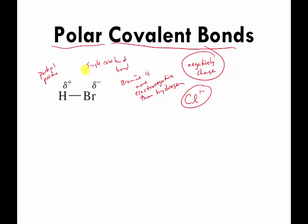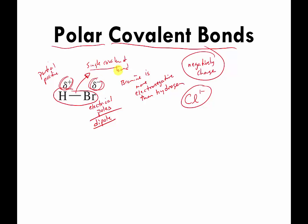Who cares? Fair enough — I'll show you an example where this is important in a few minutes. But I want to introduce a new term. This is a single covalent bond, but because there are these little electrical charges on either side of it, we say this molecule has electrical poles — or more formally, a dipole. One side of the molecule is different from the other as far as electrical charge is concerned. Because of that, this is not only a single covalent bond, it is a single polar covalent bond.